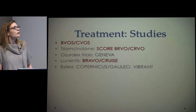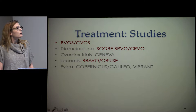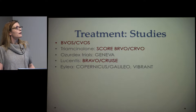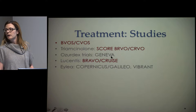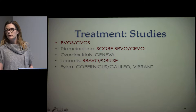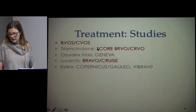All of our treatments are guided by large clinical trials. The first are the BVOS and CVOS — BVOS came out in the mid-1980s and set our gold standard of macular grid laser for branch vein occlusion with macular edema; CVOS came out in the 1990s. Later studies include the SCORE-BRVO and SCORE-CRVO looking at triamcinolone, and the Ozurdex trials. For OCAPS, you really need to know BVOS, CVOS, and SCORE. The BRAVO and CRUISE studies are where we entered the anti-VEGF era with ranibizumab.